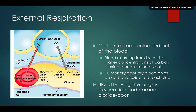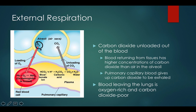Here's a diagram of what this looks like. There's going to be a lot of oxygen in the alveoli, and it will diffuse from areas of high to low concentration — that's diffusion occurring. The oxygen then attaches to hemoglobin, and oxyhemoglobin is ultimately formed.